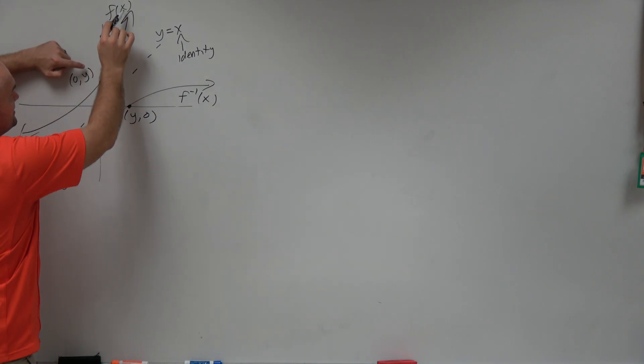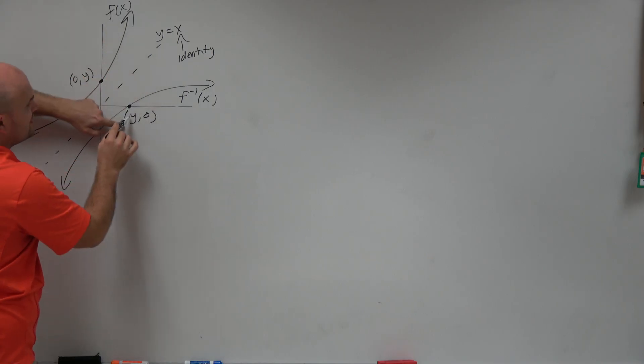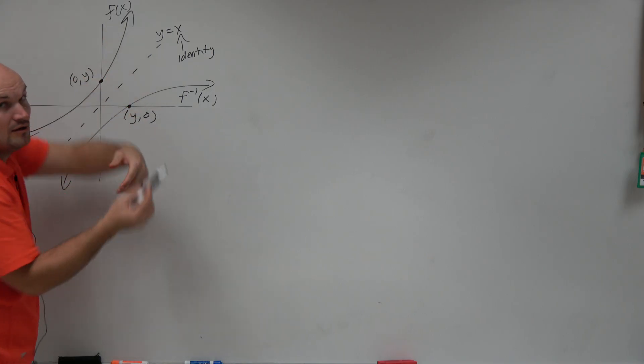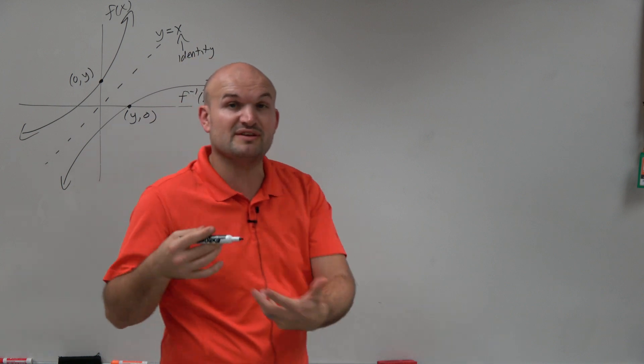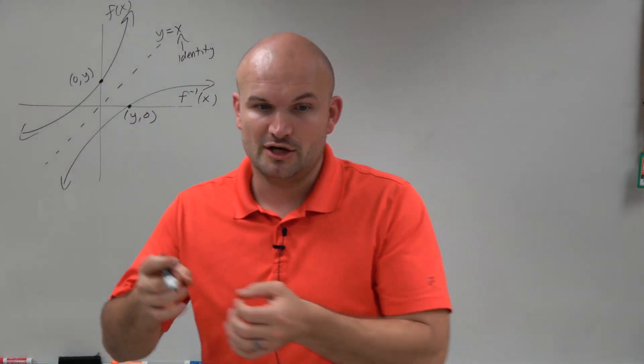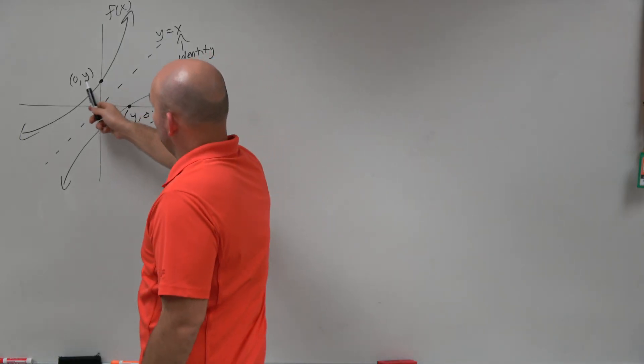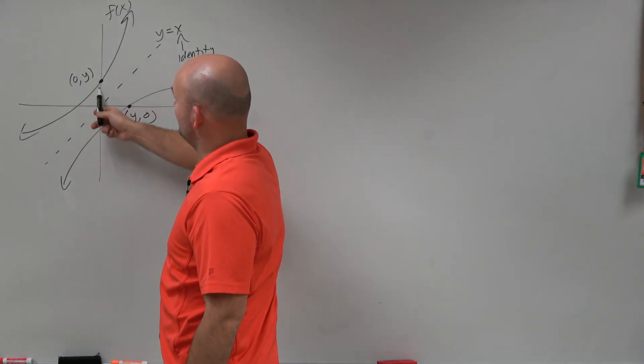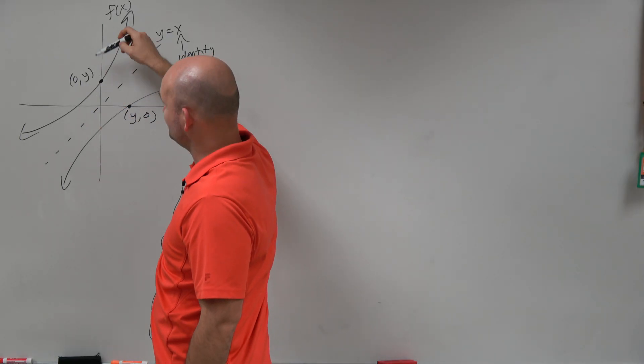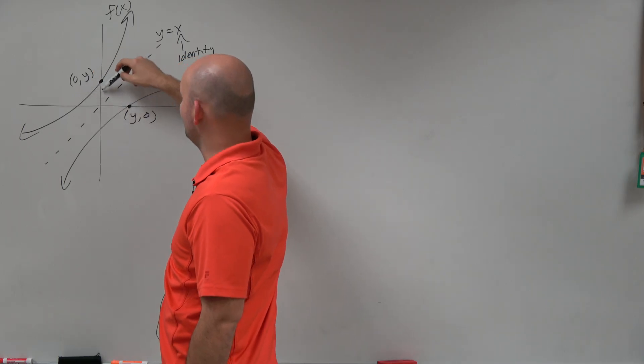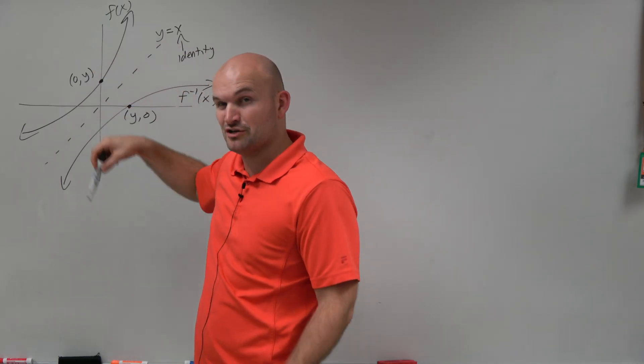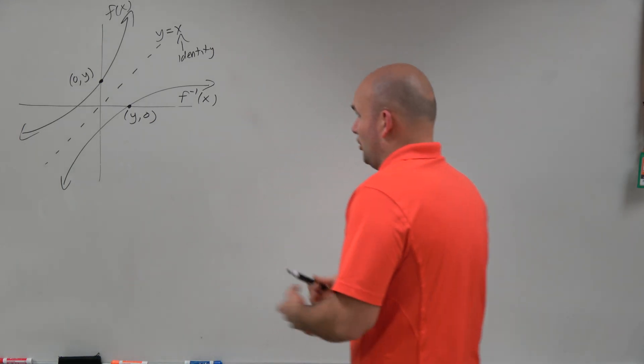Because remember, if you take 0 into y to get your function, well, then when you plug y into your inverse function, you should get back to 0. That was the description of a function and its inverse. You go in one way, it's undoing itself. So if you plug 0 into the function, you get y. And then you plug y into the inverse function, you're going to go back to 0. It's going to take you back to that identity element.